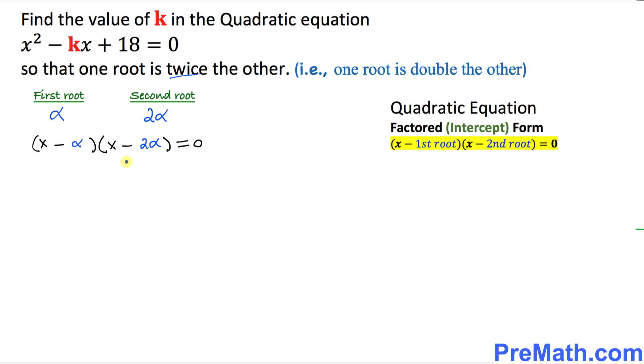Now let's go ahead and multiply this one. Use a FOIL method. X times x is going to give you x square. X times this is going to give you minus two alpha x. This is going to give you minus alpha x.